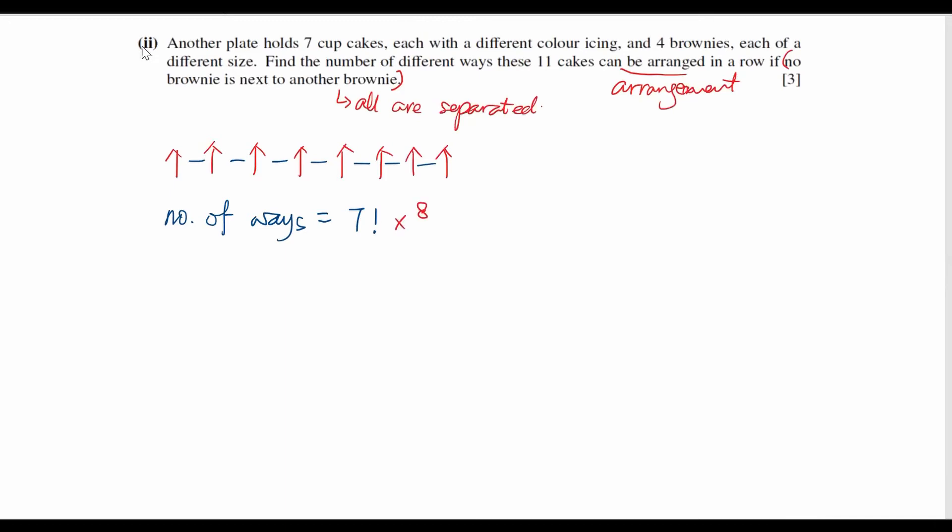And then we try to put the brownies in between these 7 cupcakes. So we have 8 different places available. And we try to pick any 4 of them and arrange these 4 brownies in between. By doing this we make sure all the brownies are separated. And hence we can use the calculator and find out the number of arrangements we have.